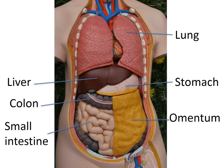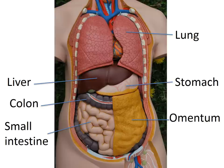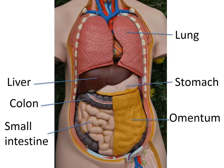We have the ascending, transverse, and descending colon starting to become the sigmoid on the bottom left of the anatomical specimen — which is the right as you're looking at it, since we're always looking at someone else's anatomy. The omentum is a fold of fatty material that folds down over the top of the abdominal cavity covering the organs of the gastrointestinal tract — we'll discuss its function later.